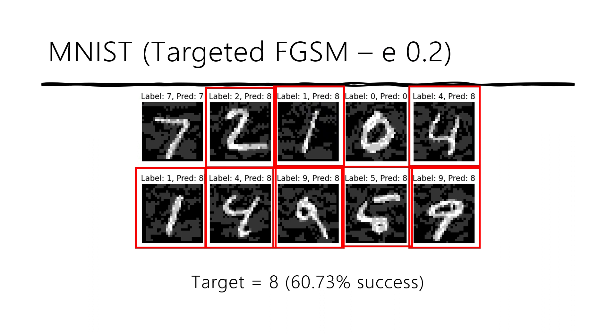You can also do a targeted attack. Here, we set the target as 8, and 8 of these images are classified as 8, even though they all still look like the original label.